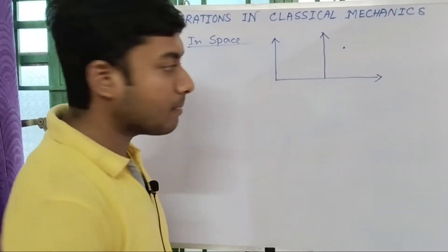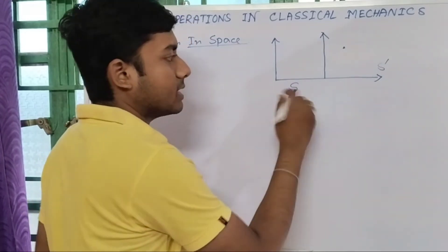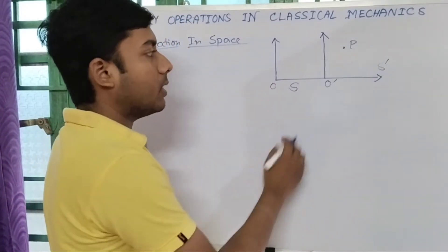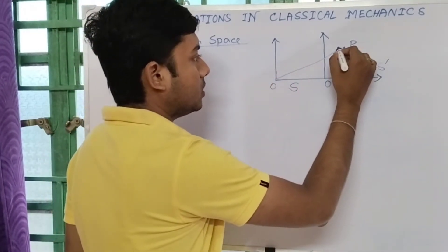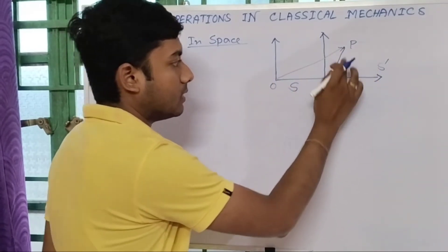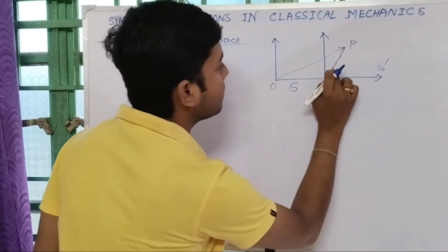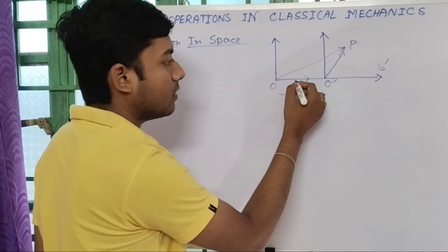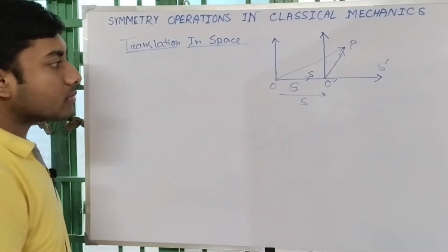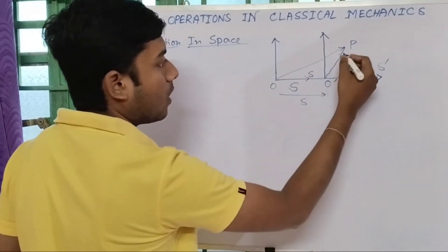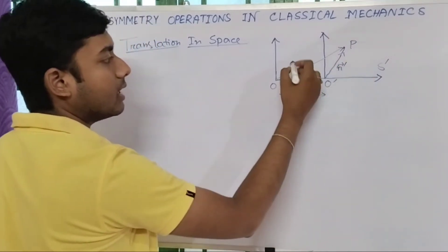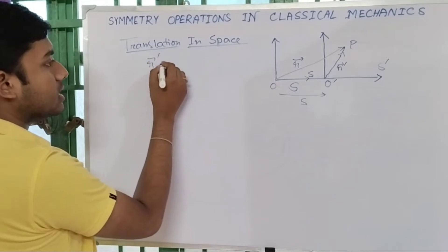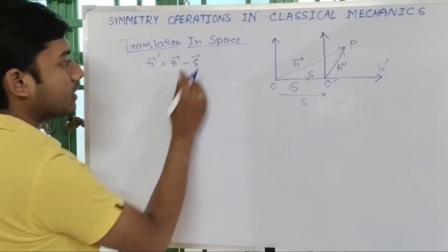Suppose we have two frames of reference: S and S-dash. This is the origin of S and this is the origin of S-dash. We have a point P. The position vector of P in S is r, and in S-dash it is r-dash. If the displacement vector between the origins is the vector s, then we can write: r-dash equals r minus s.